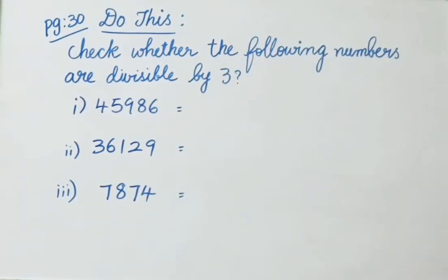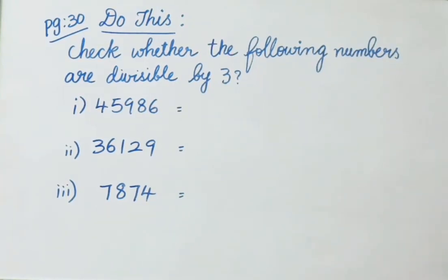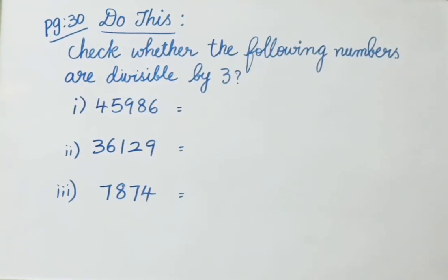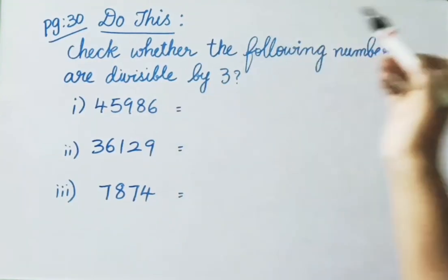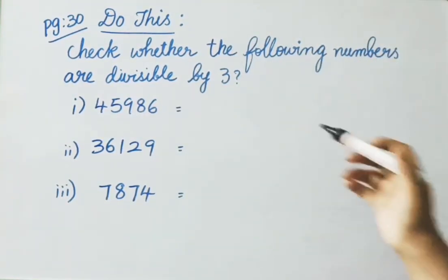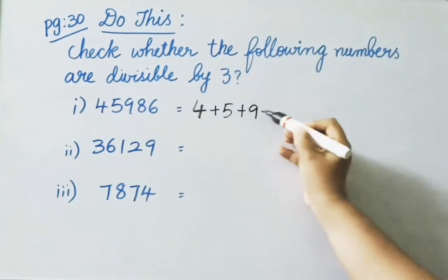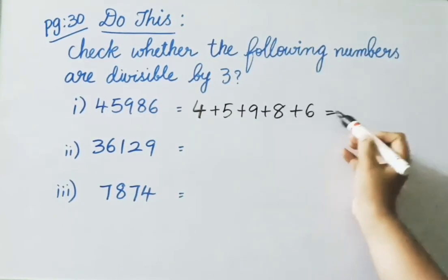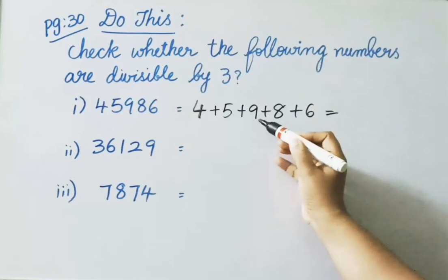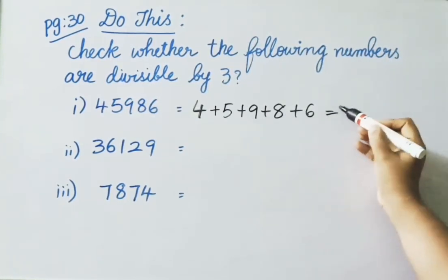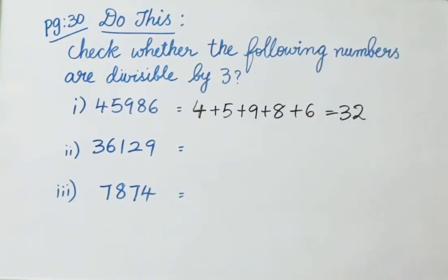See page number 30 — do this: Check whether the following numbers are divisible by 3. First number: 45,986. We need to find the sum of the digits and check if it is a multiple of 3. So: 4 plus 5 plus 9 plus 8 plus 6 equals 32. Since 32 is not present in the 3 times table, it is not a multiple of 3. So 45,986 is not divisible by 3.